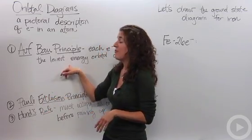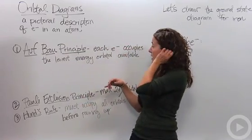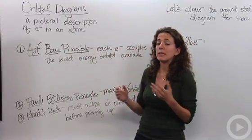The first one being the Aufbau principle. The Aufbau principle states that each electron occupies the lowest energy orbital available.